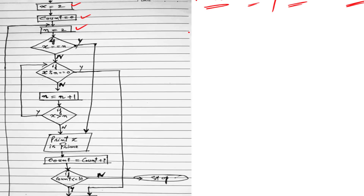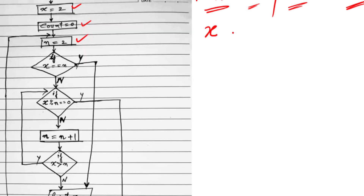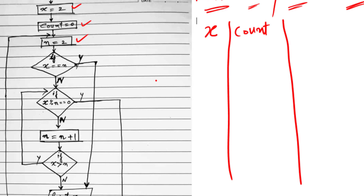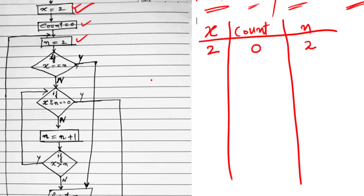I have declared x, then another variable count, then another variable n. I have initialized x to 2, count to 0, and n to 2. I am using an if statement, and in this decision box I am checking whether x is equal to n.